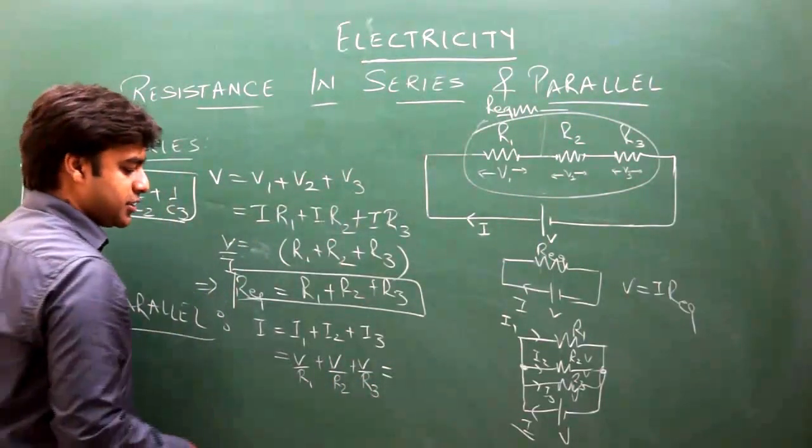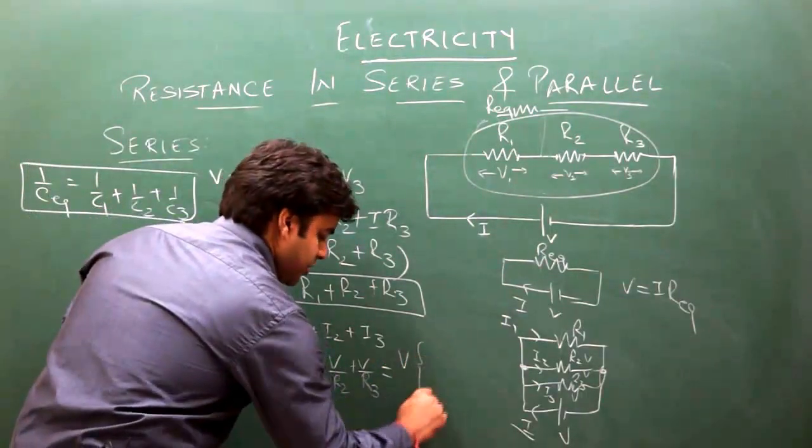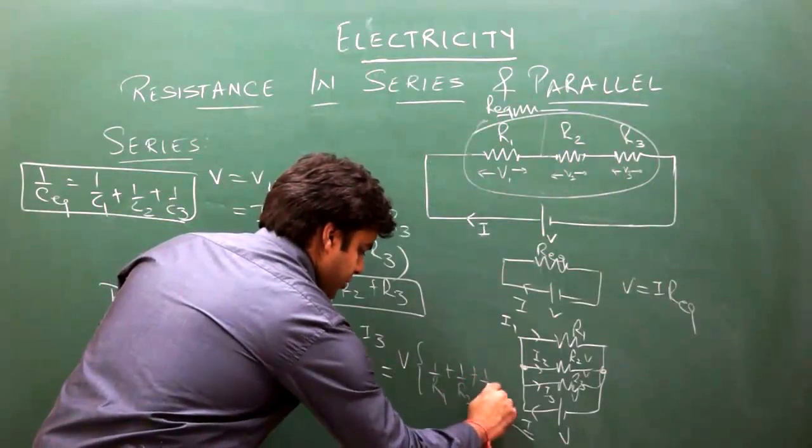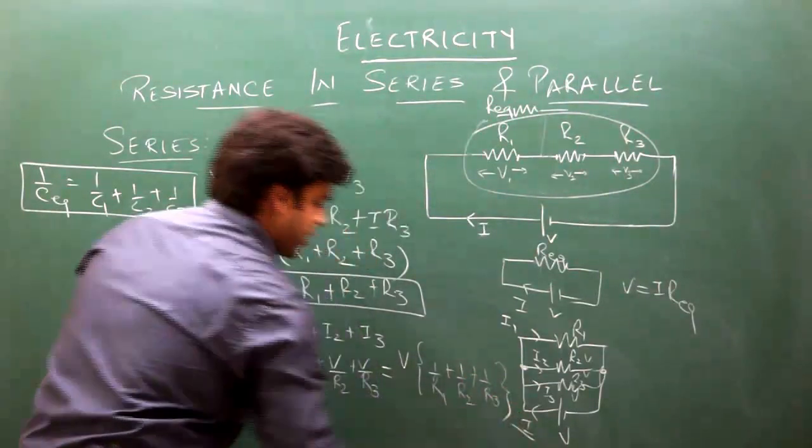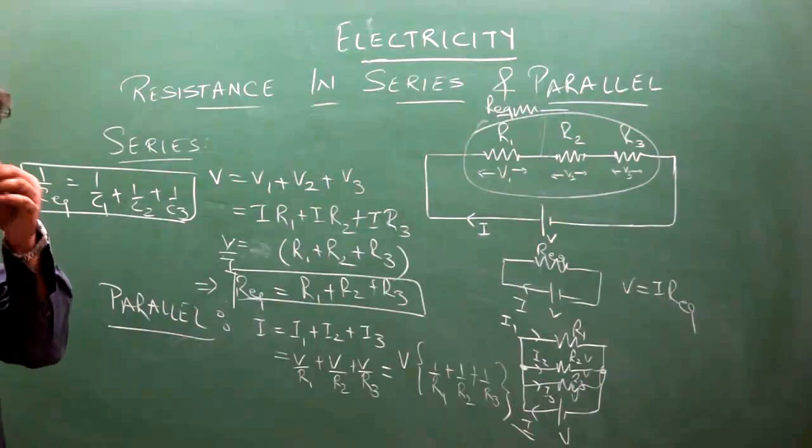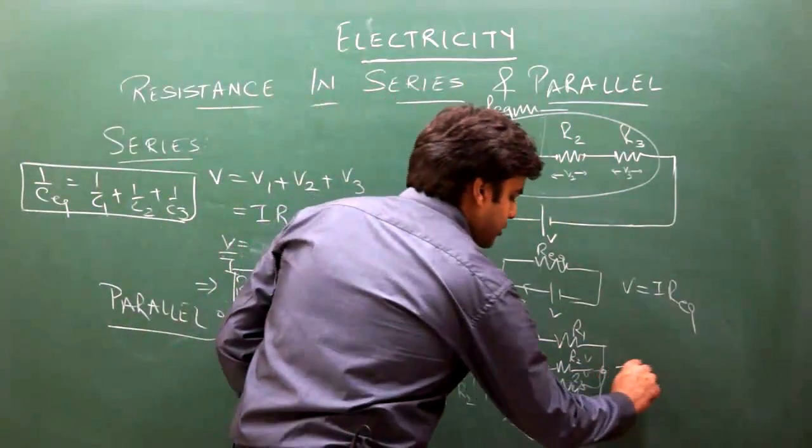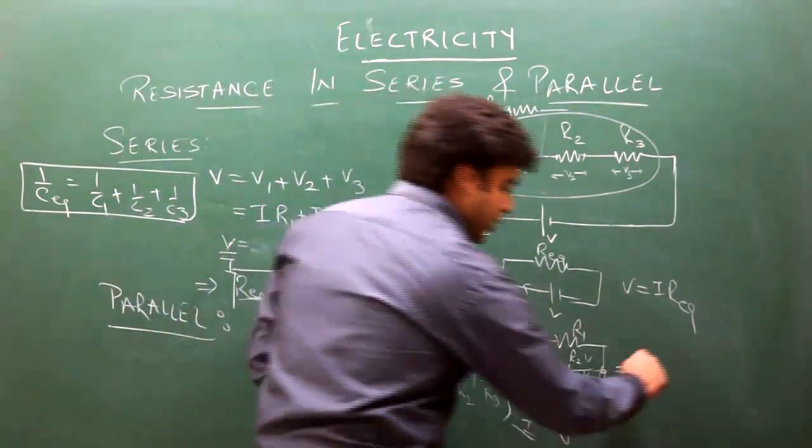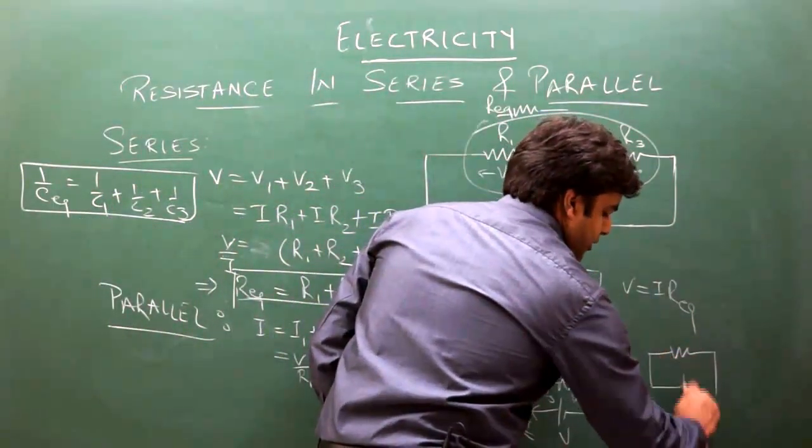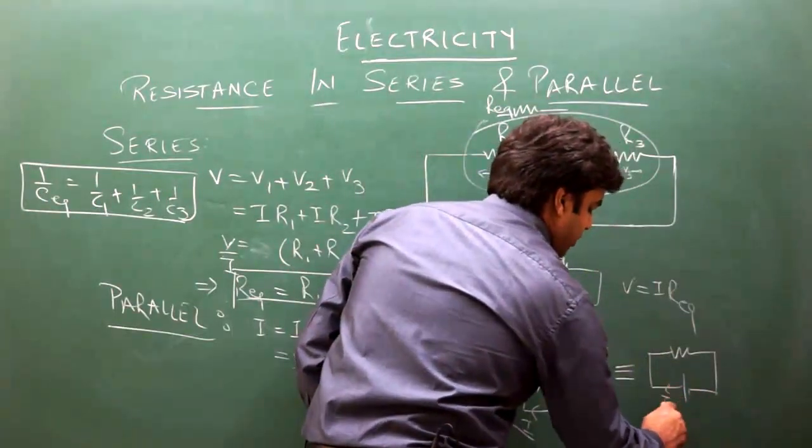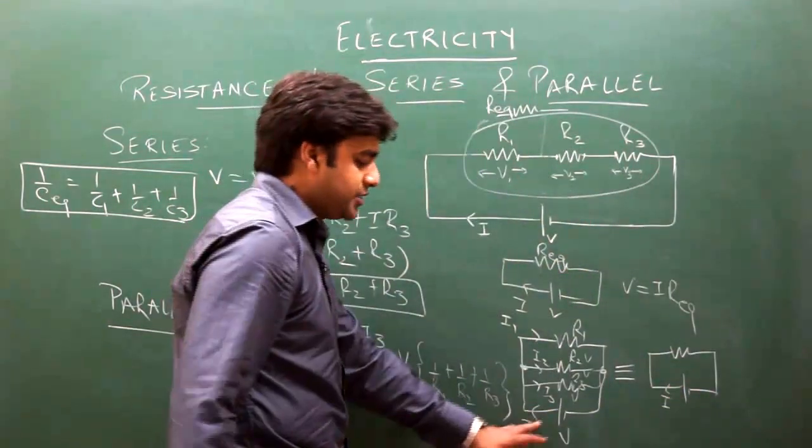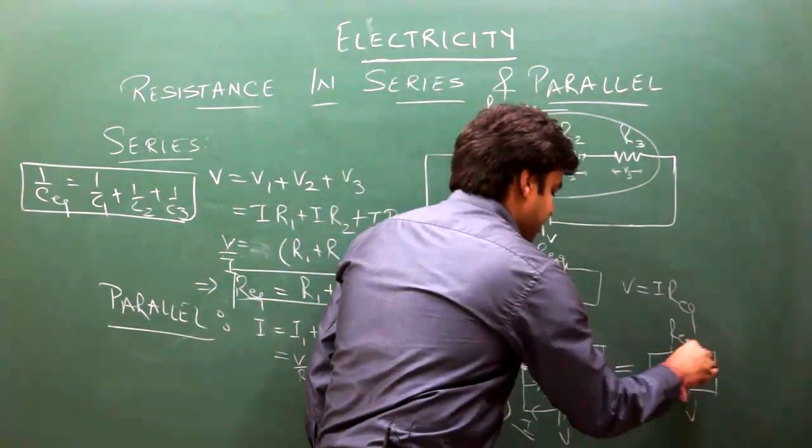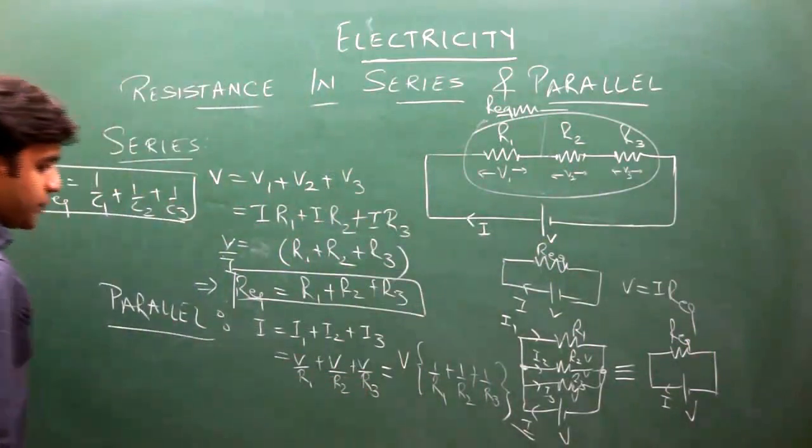Taking V common, this equals V times (1/R1 + 1/R2 + 1/R3). If we replace these three with one equivalent resistance such that the battery sees the same current I and voltage V,